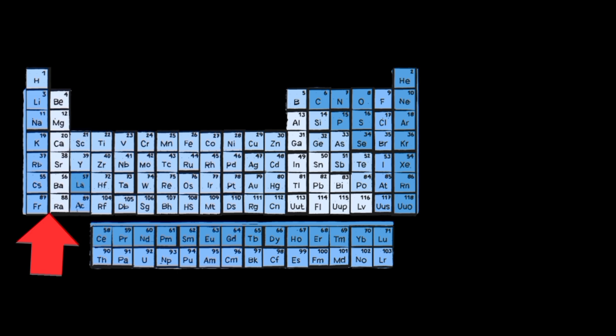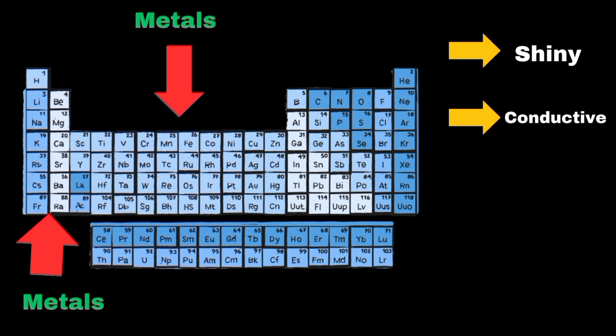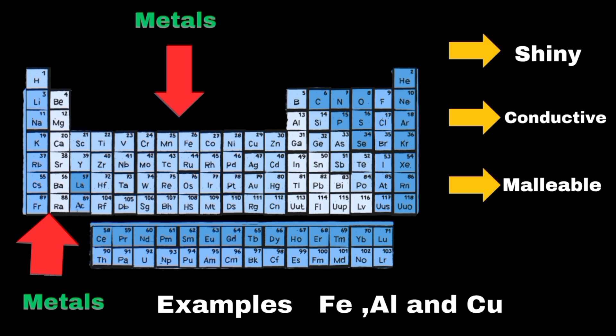Metals are found on the left and center of the table, are shiny, conductive, and malleable. Examples include iron, aluminum, and copper.